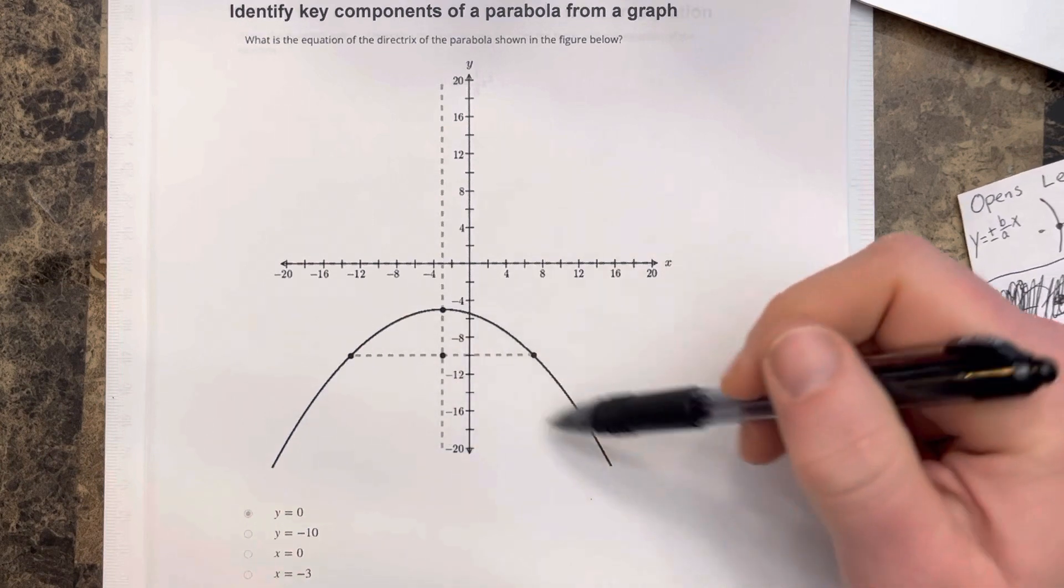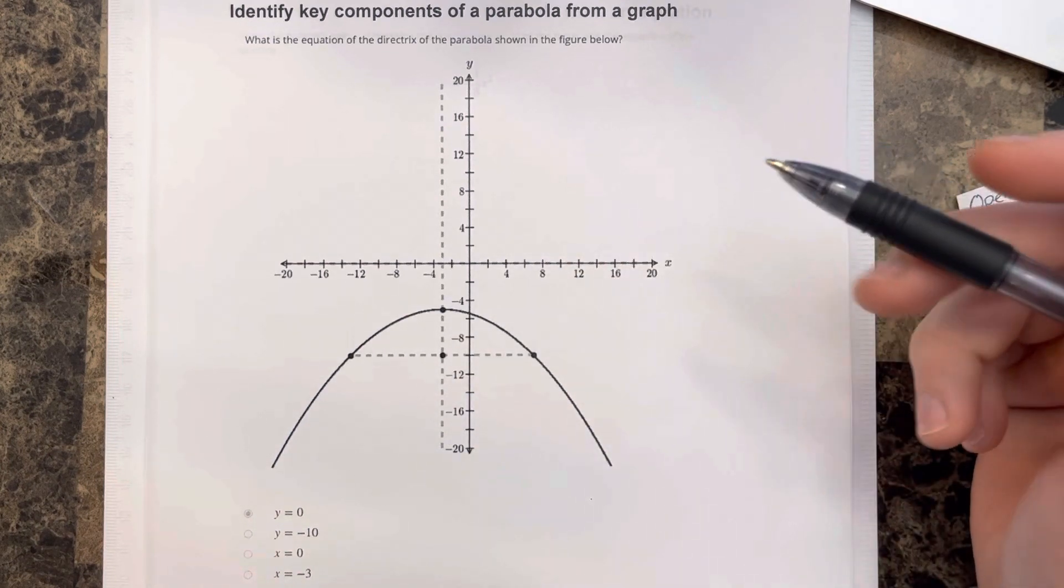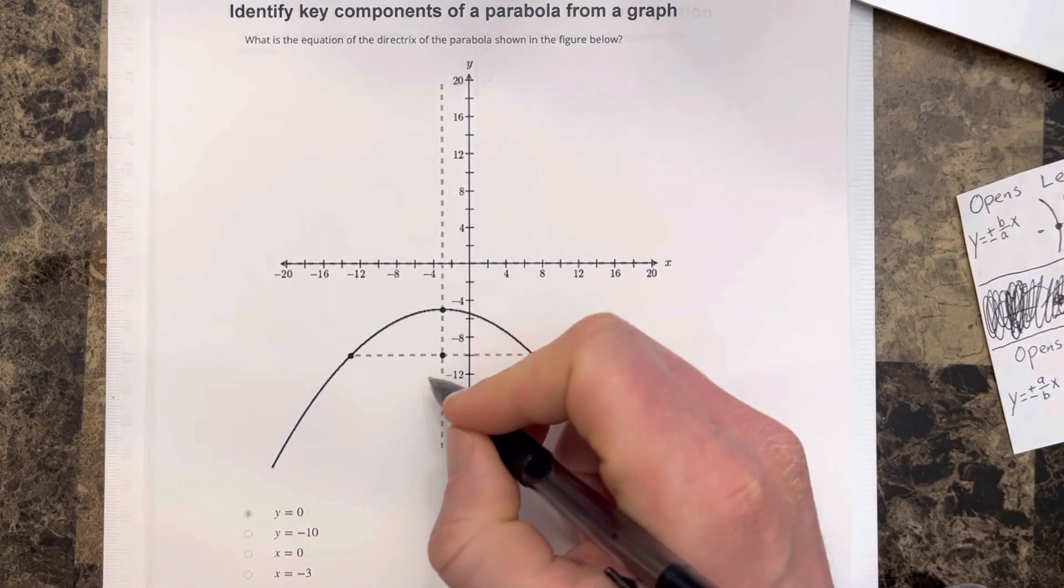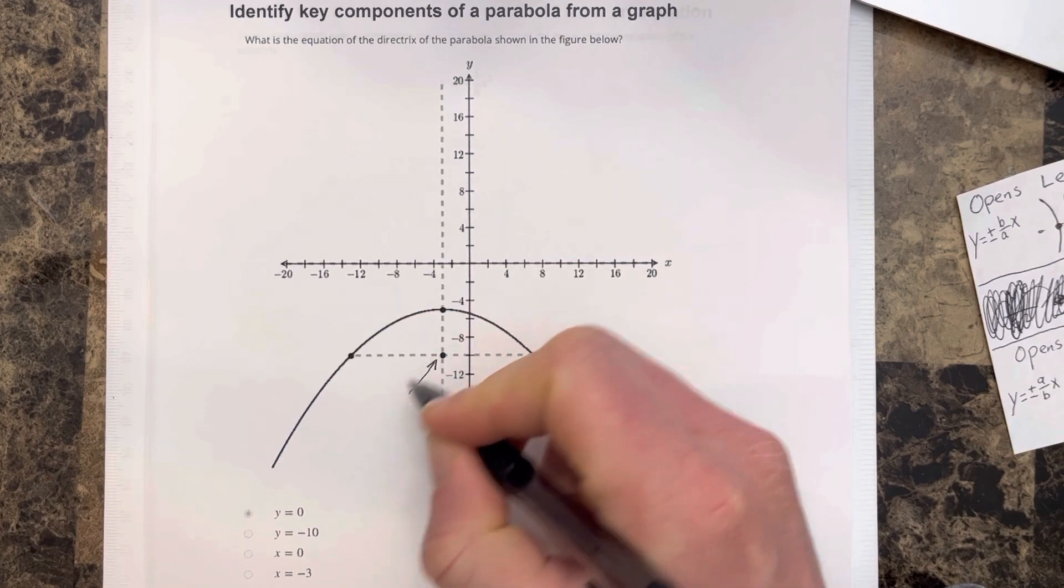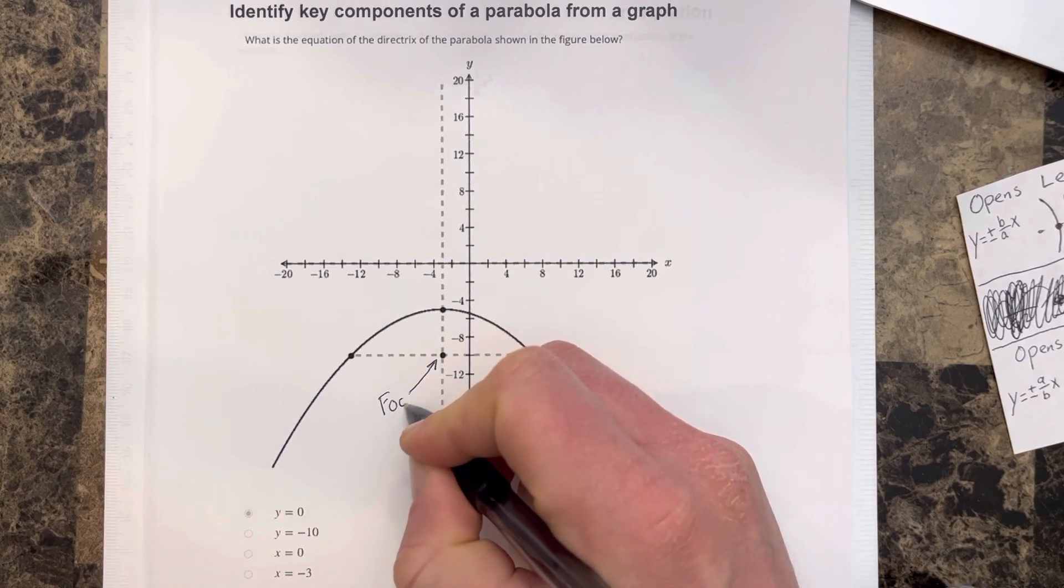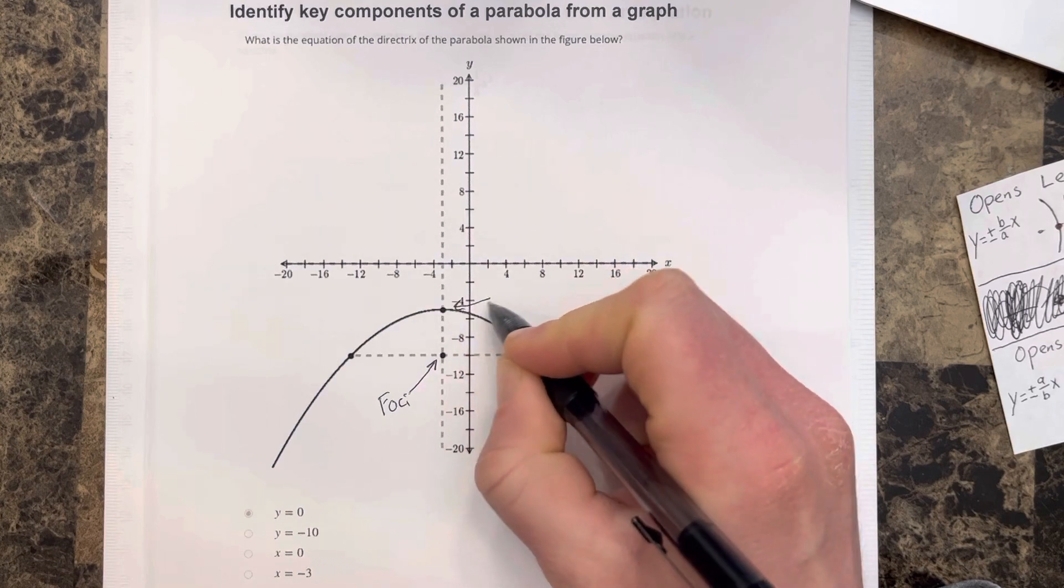They give you this downward-facing parabola. Let's point out all the things that we know. This point right here is the foci. This point here is the vertex.